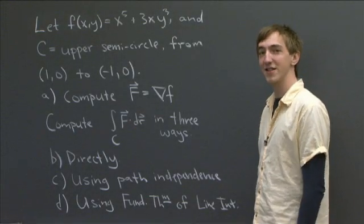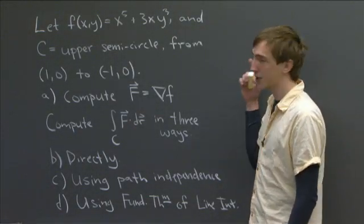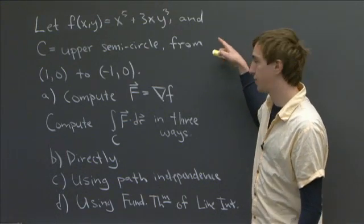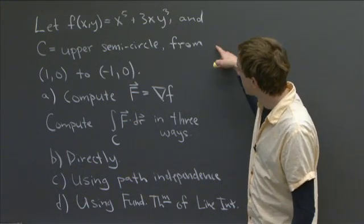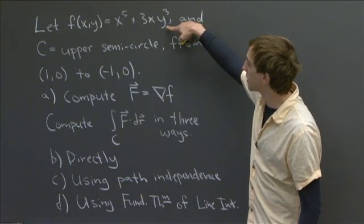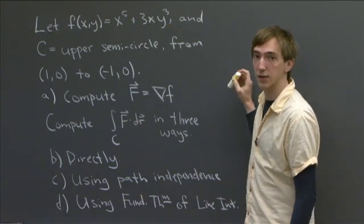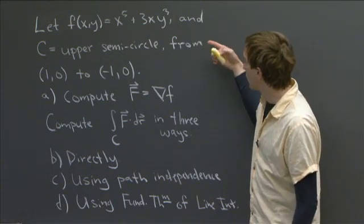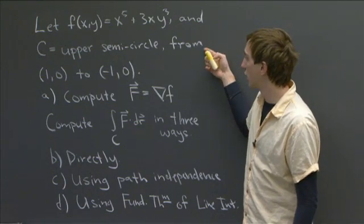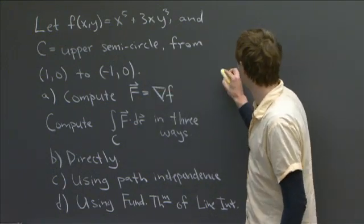Hello and welcome back to recitation. The problem I'd like to work with you now is a long one. So it's going to be practice computing line integrals. To begin with, we have this function of two variables: f is x to the fifth plus 3xy cubed. And we have c is the upper semicircle going from (1,0) to (-1,0).